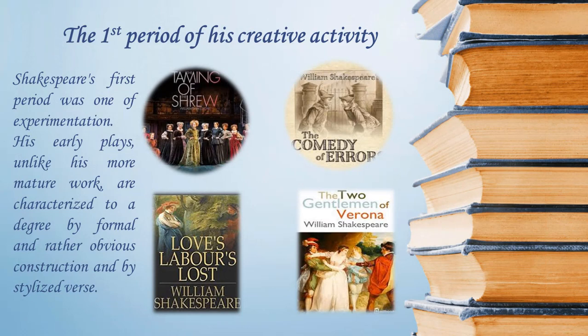Shakespeare's first period was one of experimentation. His early plays are characterized by formal and rather obvious construction and by stylized verse. Chronicle history plays were a popular genre of the time, and four plays dramatizing the English civil strife of the 15th century are possibly Shakespeare's earliest dramatic works. These plays — Henry VI parts 1, 2, and 3, and Richard III — deal with evil resulting from weak leadership and national disunity fostered for selfish ends.